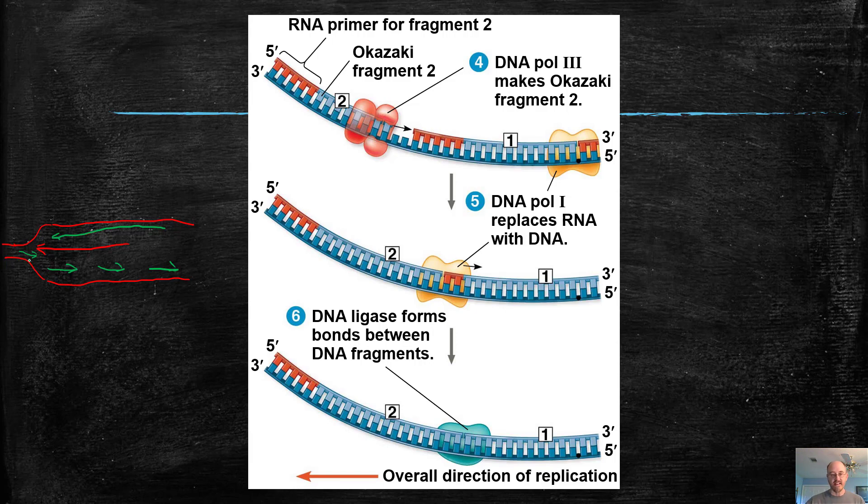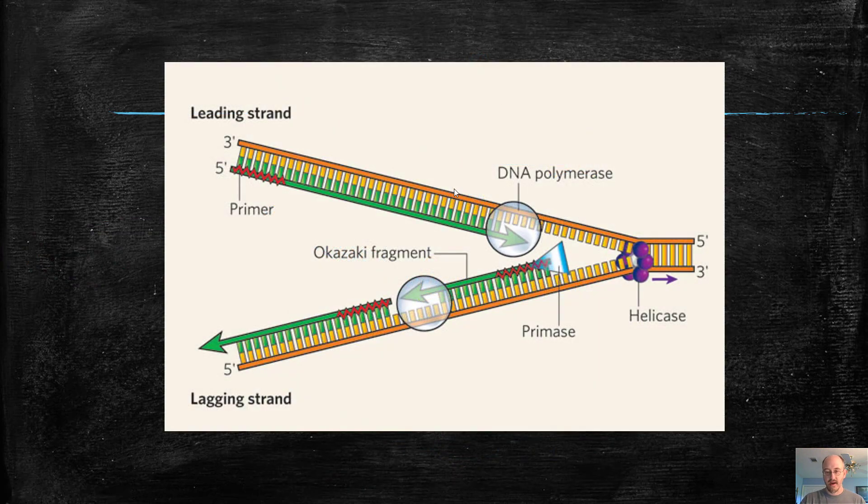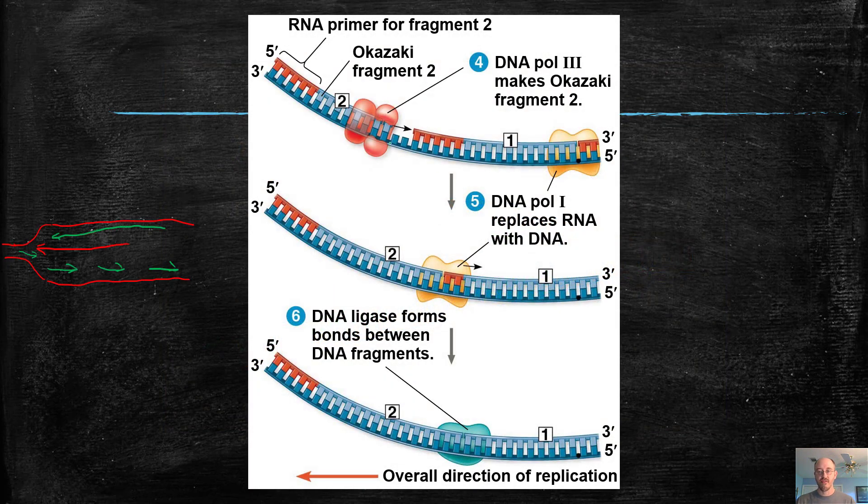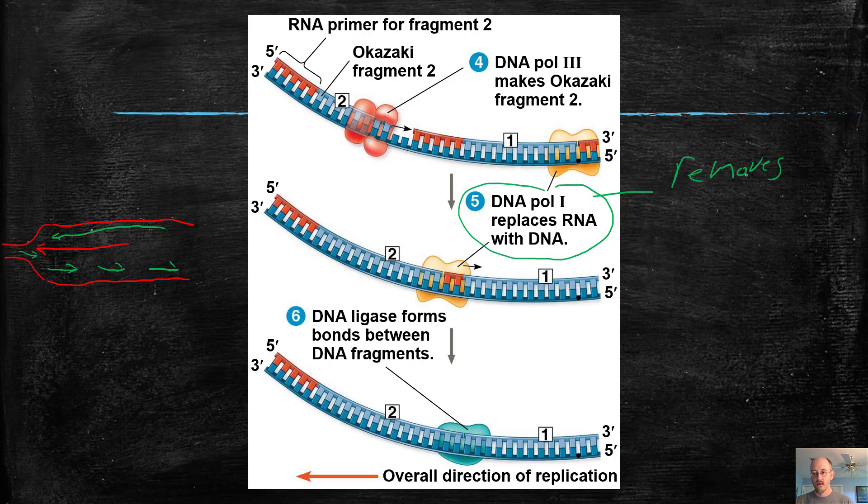So what happens is, let me step back. DNA polymerase three, as we've talked about before, makes most of the DNA in these fragments. Then DNA polymerase one comes in, it's another enzyme. And what DNA polymerase one does is it removes the primer and replaces it with DNA nucleotides.